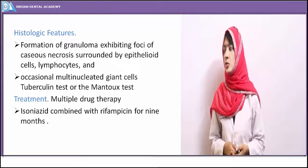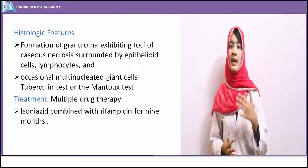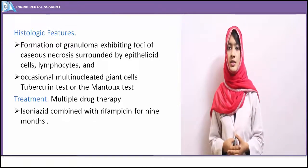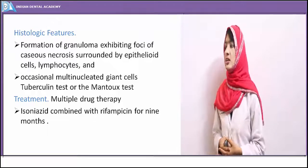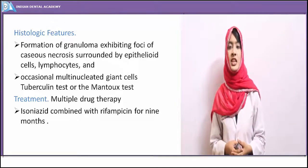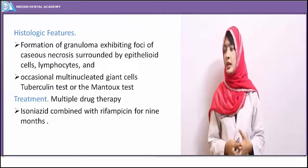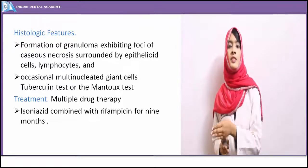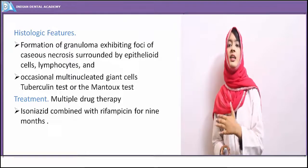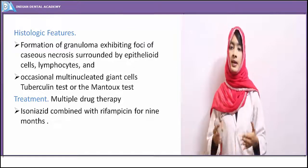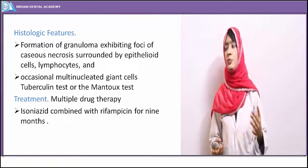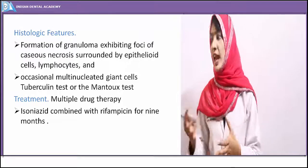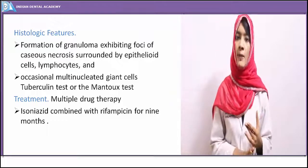The periapical granuloma eventually involves the bone; both the maxilla and mandible may be affected by diffuse spread of infection, progressing to osteomyelitis — with the mandible more commonly affected by tuberculous osteomyelitis. Treatment is multi-drug therapy: isoniazid, rifampicin, and pyrazinamide for four months, followed by isoniazid and rifampicin for five months — a total of nine months — because the tuberculous bacillus is known to develop resistance.